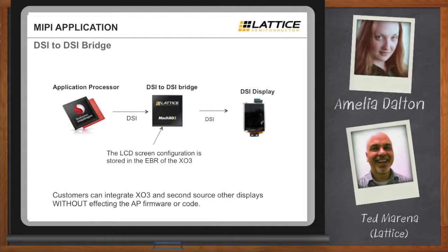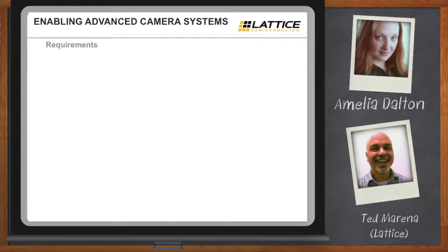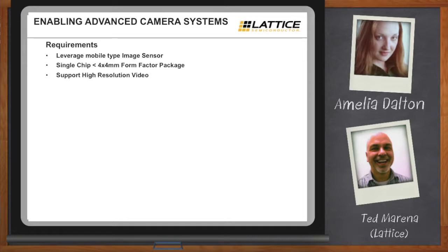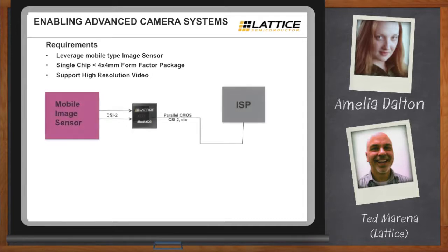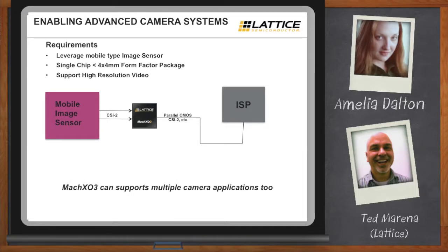For image sensors — if you have an embedded product with an image signal processor and algorithms tuned over the years, our devices let you bridge to a mobile image sensor. We bridge from CSI-2, the MIPI interface for image sensors, to whatever bus your image signal processor requires. Because FPGAs are programmable, you could even support multiple cameras in that same design.